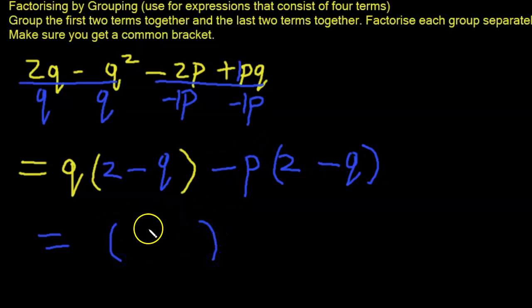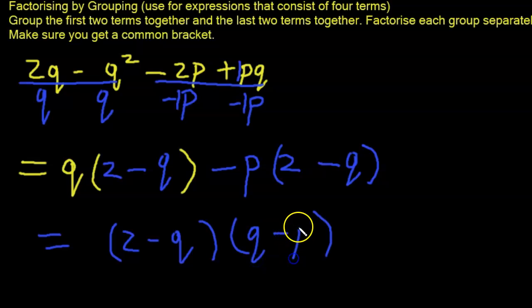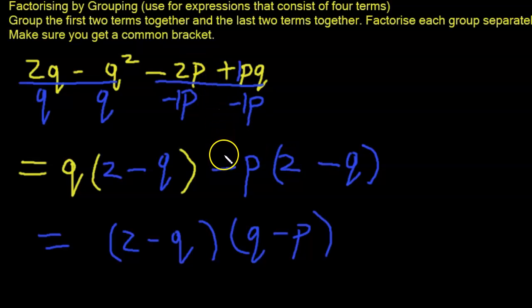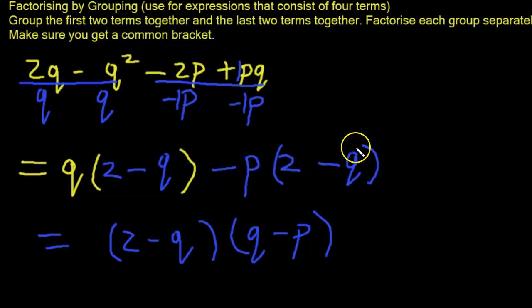The common factor is (2 minus q). Factoring out (2 minus q), we are left with q minus p. So the final answer is (2 minus q)(q minus p). As a check: q times 2 is 2q, q times minus q is minus q²; negative p times 2 is negative 2p, and negative p times negative q is positive pq. We are confident the factorization is correct.